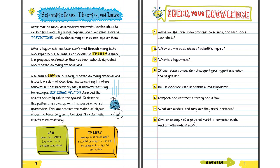Scientific ideas, theories, and laws: After making many observations, scientists develop ideas to explain how and why things happen. Scientific ideas start as predictions, and evidence may or may not support them. After a hypothesis has been confirmed through many tests and experiments, scientists can develop a theory. A theory is a proposed explanation that has been extensively tested and is based on many observations.